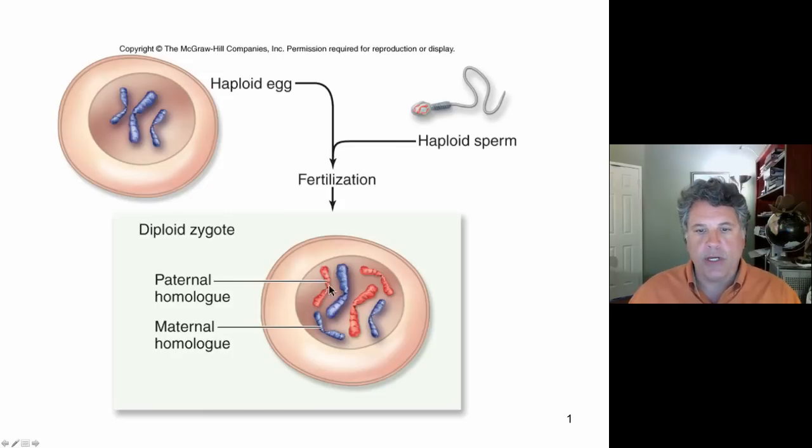And we have then two sets of chromosomes, one paternally inherited through the sperm and one maternally inherited through the egg. Each pair of chromosomes then has a maternal homologue and a paternal homologue.